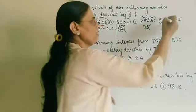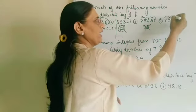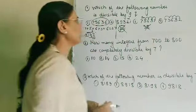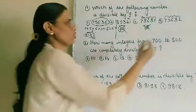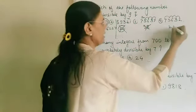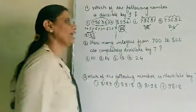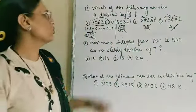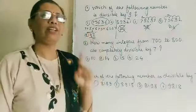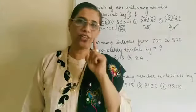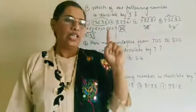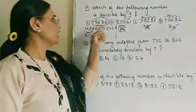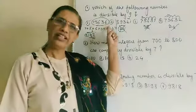Now the fourth option: 7 plus 5 is 12, 12 plus 6 is 18, 18 plus 3 is 21, 21 plus 2 is 23. So 23 again is not divisible by 9, and therefore this option is incorrect. So the first option is correct. To recap: the divisibility test for 9 states that if the sum of the digits is divisible by 9, then the whole number is divisible by 9.